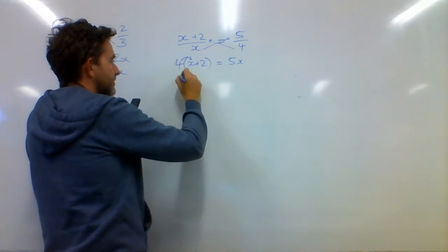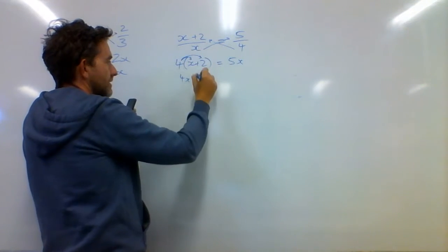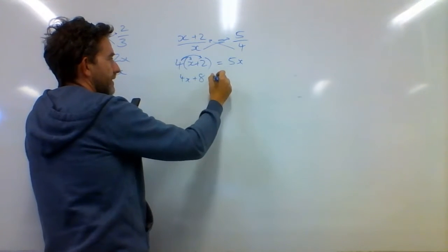4 times X is 4X. 4 times 2 is 8. And that's equal to 5X.